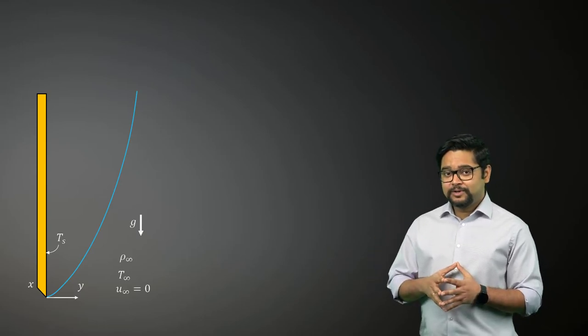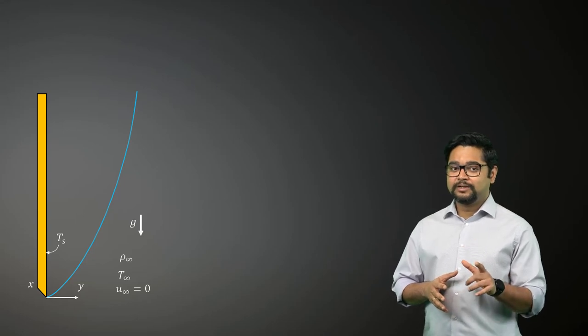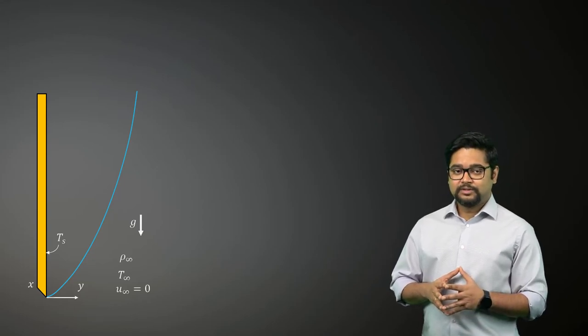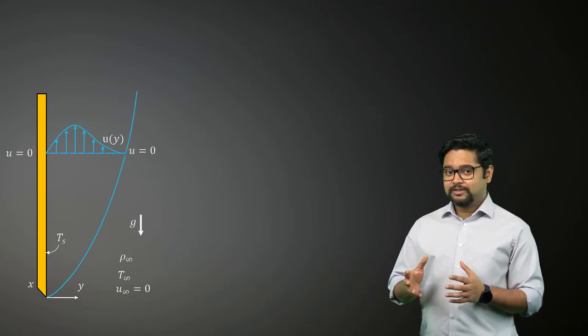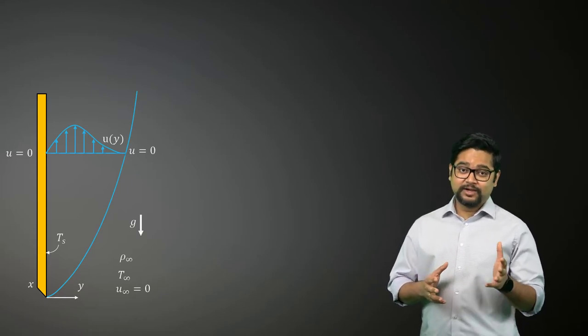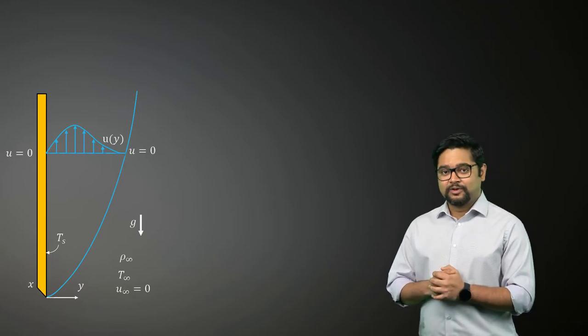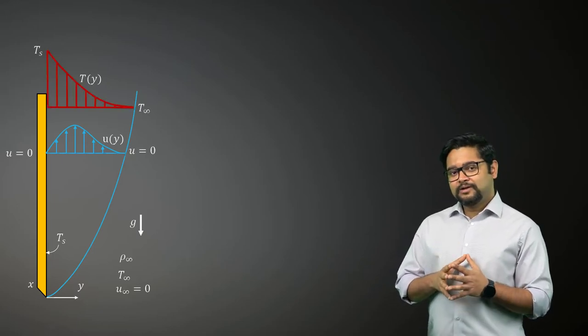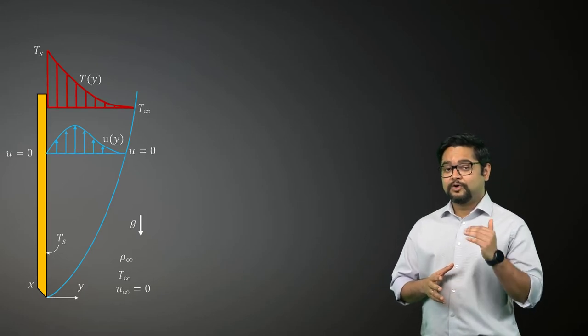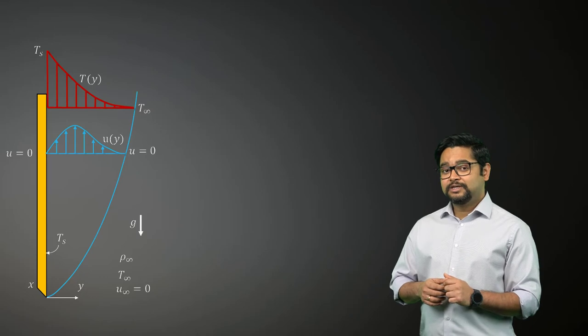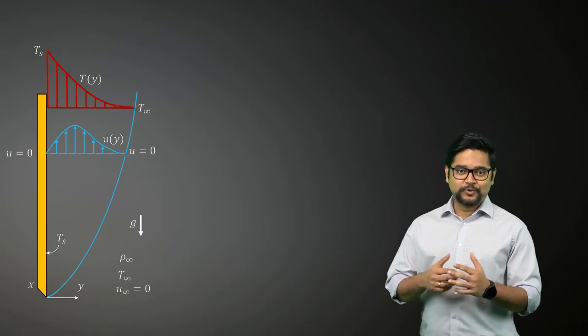The resulting boundary layer is different from the one we get in the case of forced convection. This is because the velocity is zero as y approaches infinity and as well as when y is equal to zero close to the wall. A natural convection boundary layer will also develop if the plate is immersed in a hotter fluid. However, the fluid motion in this case will be downwards as shown here.